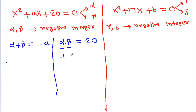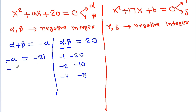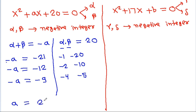Since alpha and beta are negative integers with product 20, they can be the pairs: minus 1 and minus 20, minus 2 and minus 10, or minus 4 and minus 5. Therefore, minus a can be equal to 21, 12, or 9.